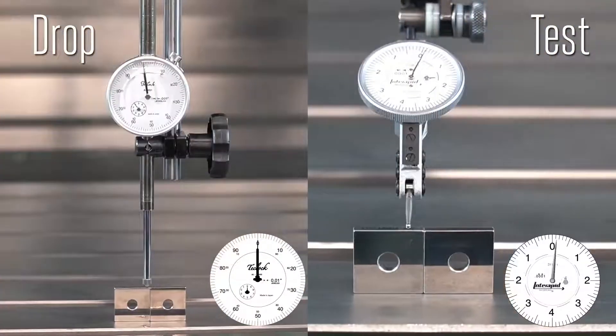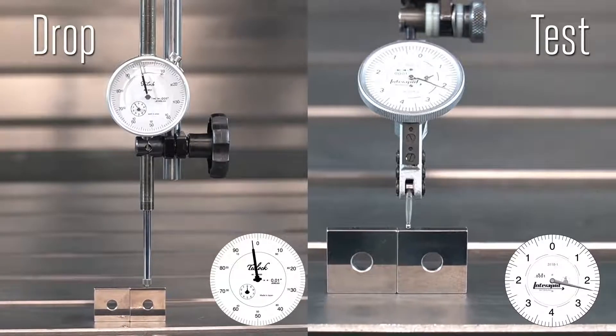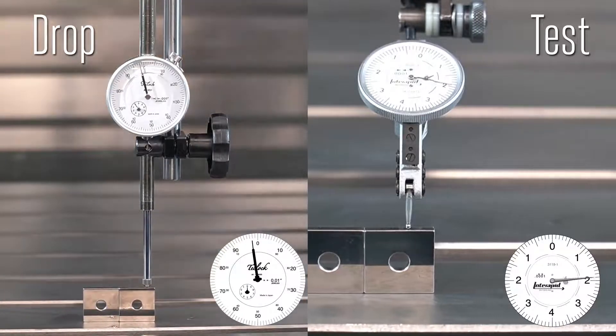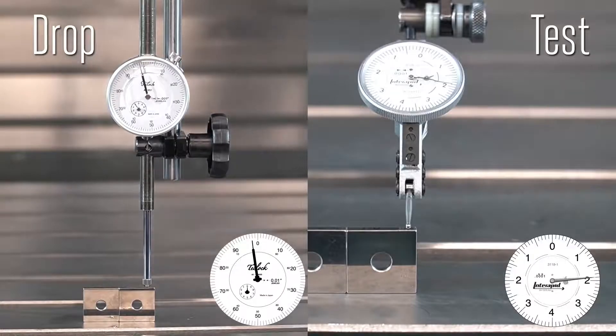Here the distance is particularly small. Now the test indicator measures it accurately, but the precise distance isn't quite visible on the drop indicator.